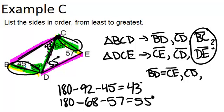Because 92 degrees is bigger than 68 degrees, that means that BC has to be bigger than DE. Therefore, the last two sides in our ordering will be DE, followed by the biggest side, BC.